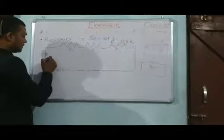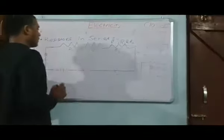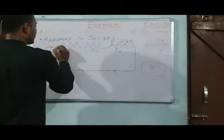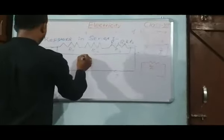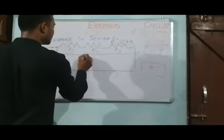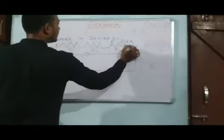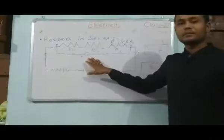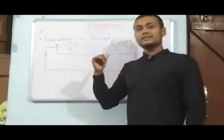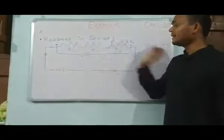The current I flows through the entire circuit. The potential difference across all three resistors is V, having two terminals X and Y. The potential difference across these two terminals X and Y is V, and the current flowing in this entire circuit is I. The resistors are R1, R2 and R3.